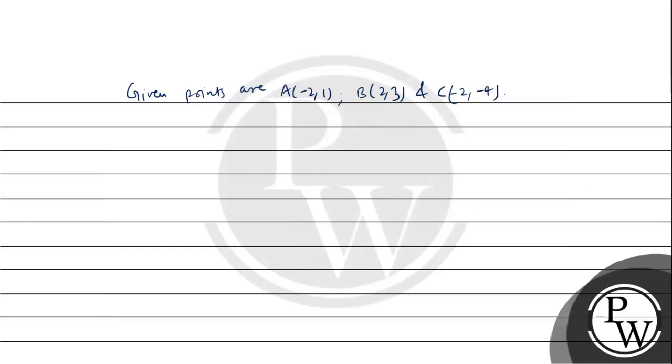Now, we have to find the angle between AB and BC. Therefore, slope of line AB. What is the slope of line AB? Y2 minus Y1, that is 3 minus 1 upon X2 minus X1, that is 2 minus (-2). Then, 2 upon 4, that is 1 upon 2. Let's call this M1.